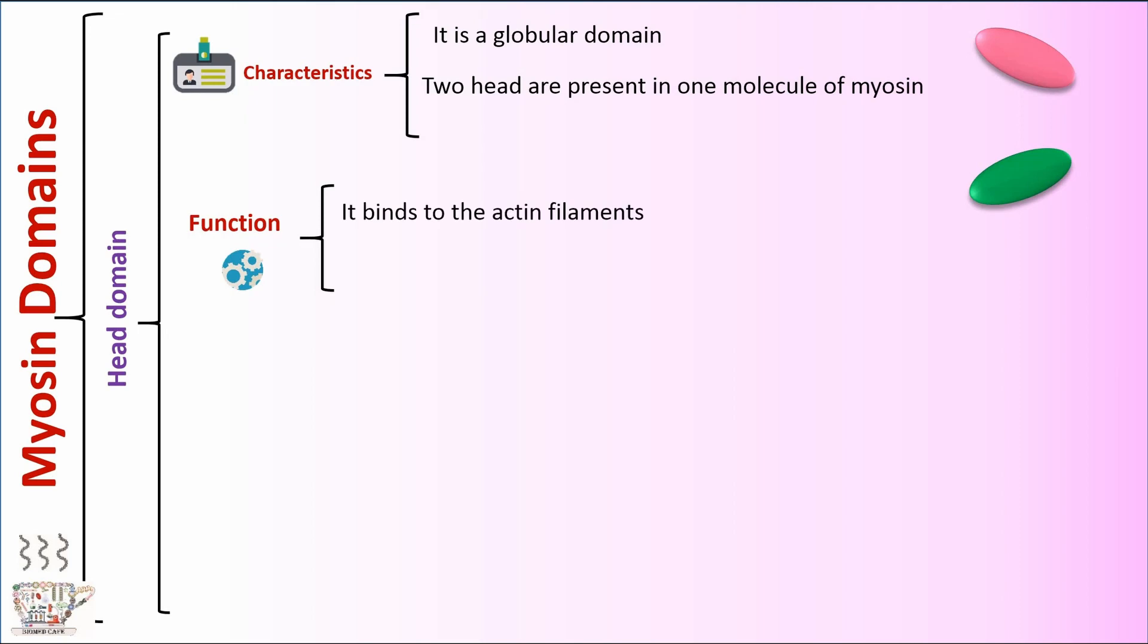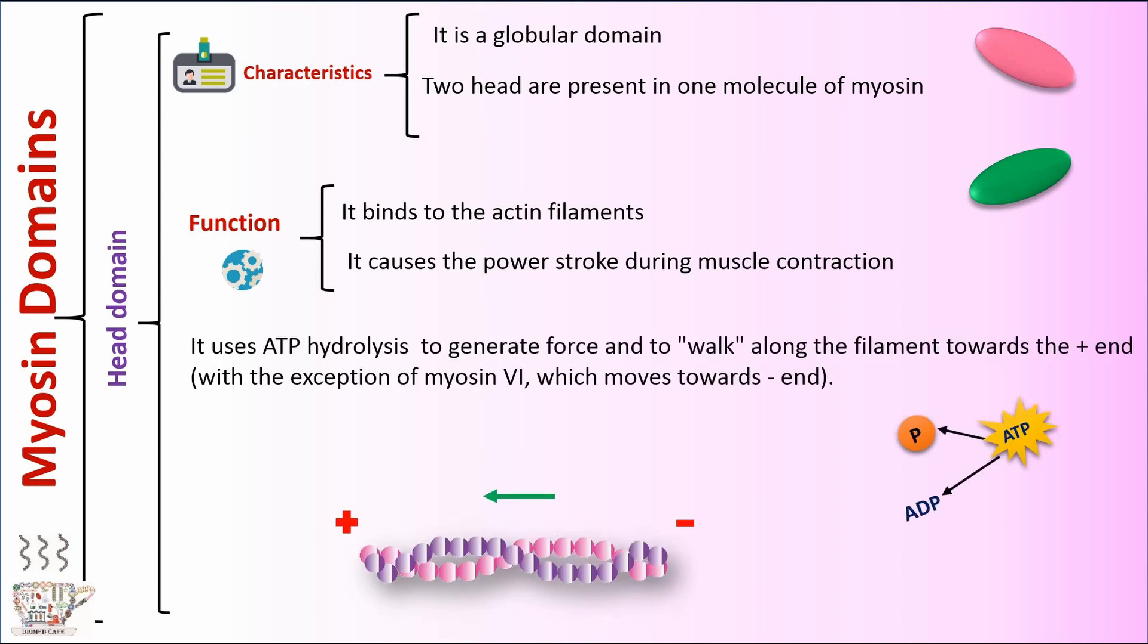Function of head domain: It binds to the actin filaments. It causes the power stroke during muscle contraction. It uses ATP hydrolysis to generate force and to work along the filament toward the plus end, with the exception of myosin 6 which moves toward minus end.